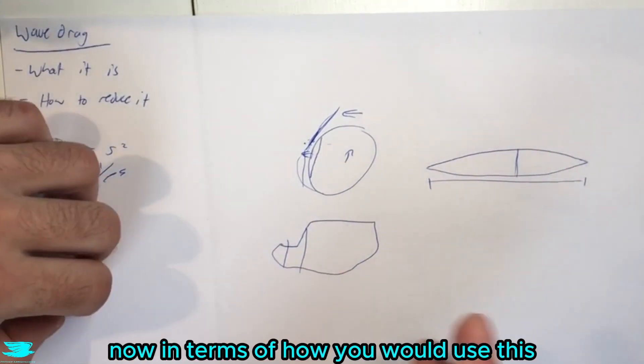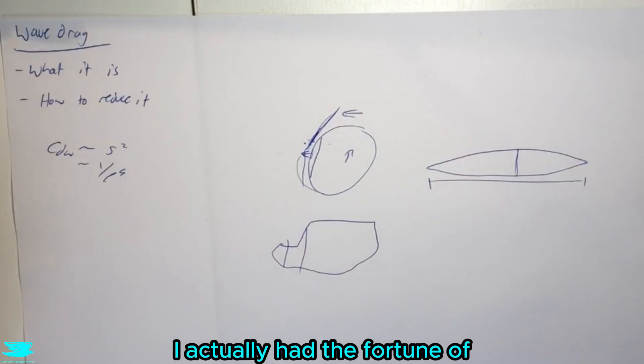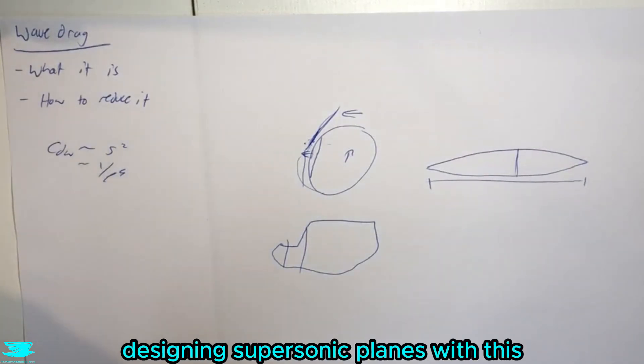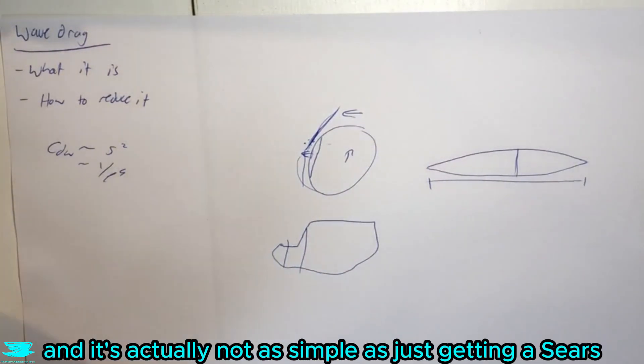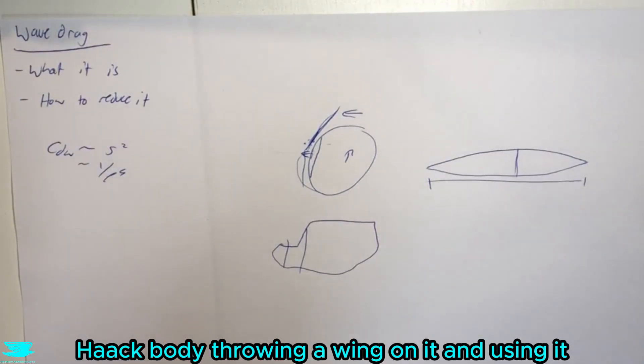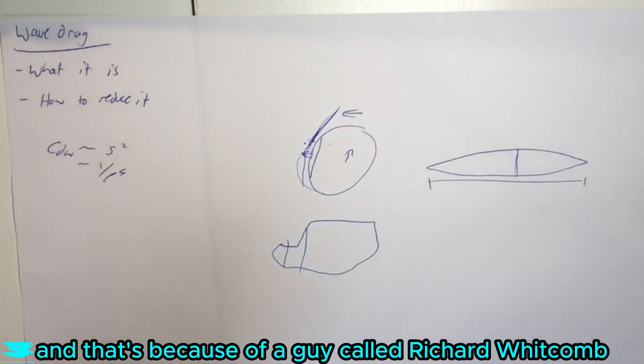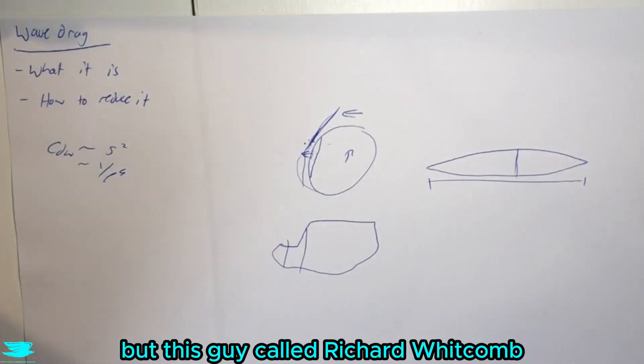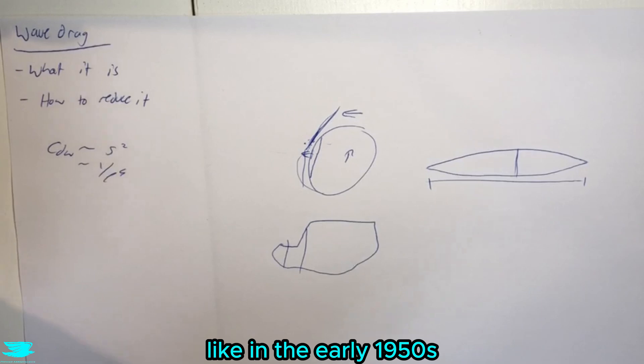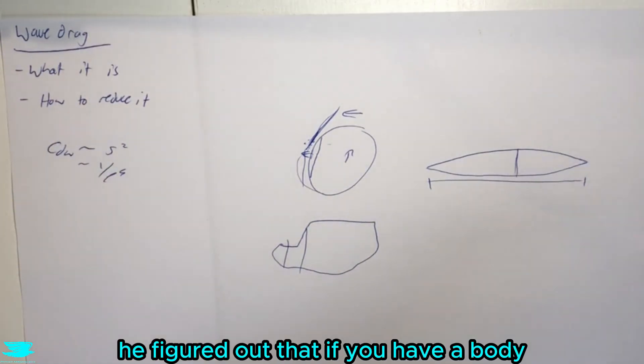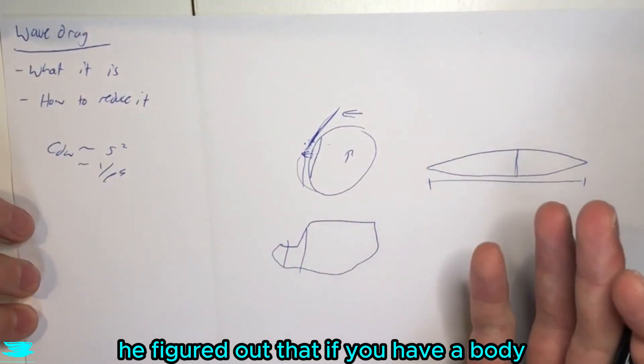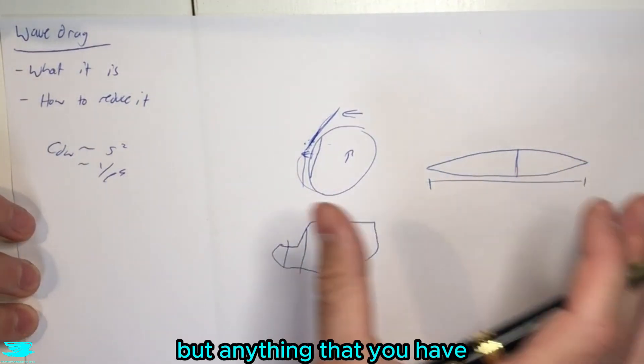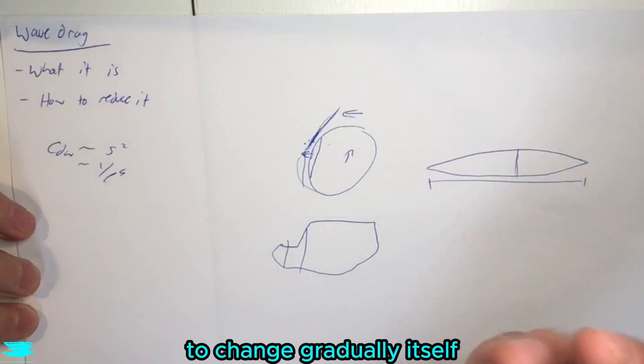Now, in terms of how you'd use this, I actually had the fortune of designing supersonic planes with this. And it's actually not as simple as just getting a Sears-Haack body, throwing a wing on it and using it. And that's because of a guy called Richard Whitcomb, stick Rick to his friends. I don't know if that's actually true or not, but this guy called Richard Whitcomb in the early 1950s, I think 1952, he figured out that if you have a body, not just a Sears-Haack body, but anything that you have, the entire cross-sectional area has to change gradually itself.